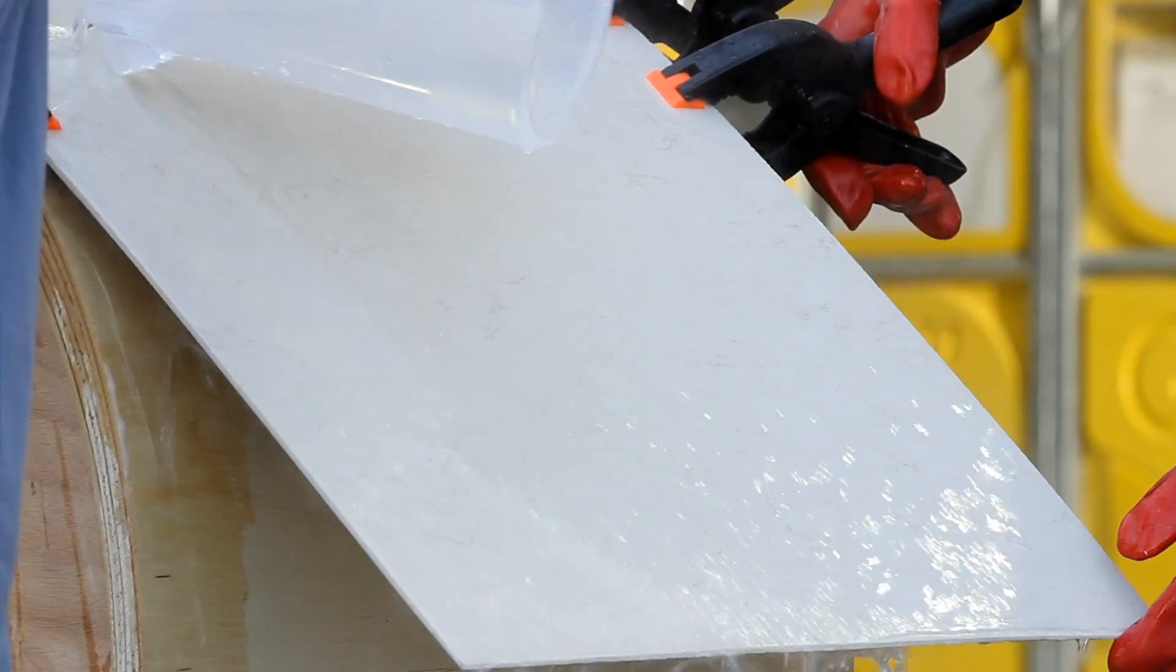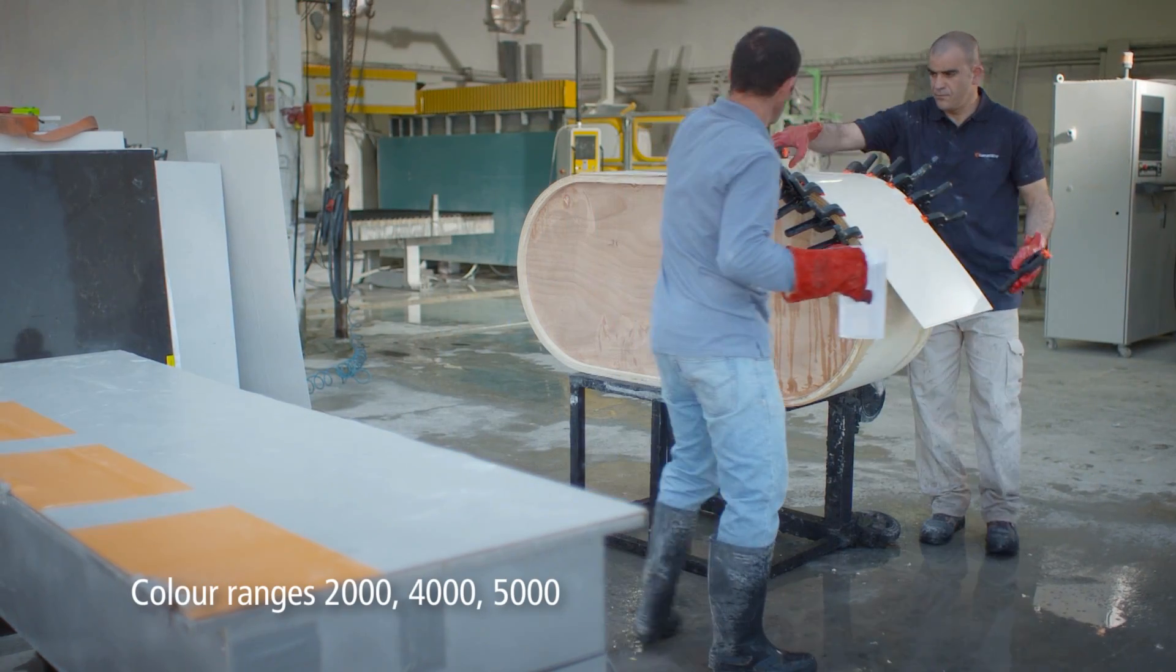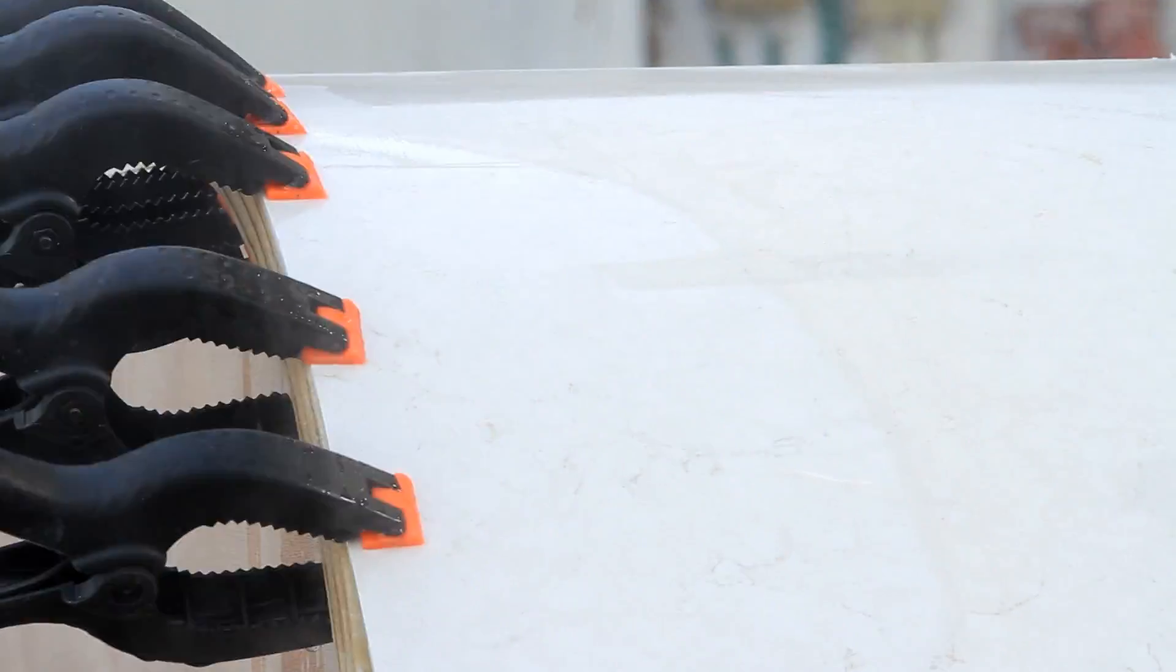Some Caesarstone colors are more suitable for thermoforming than others. These are the 2000, 4000 and 5000 ranges.